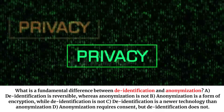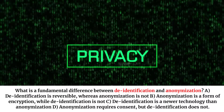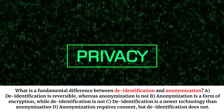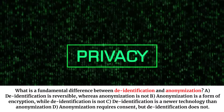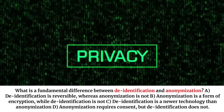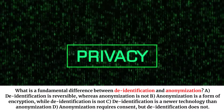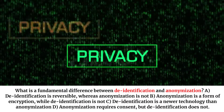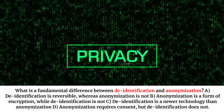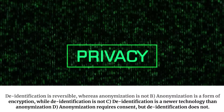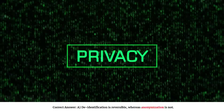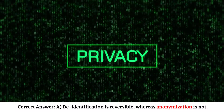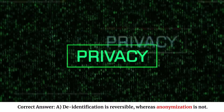What is a fundamental difference between de-identification and anonymization? A. De-identification is reversible, whereas anonymization is not. B. Anonymization is a form of encryption, while de-identification is not. C. De-identification is a newer technology than anonymization. D. Anonymization requires consent, but de-identification does not. Correct answer: A. De-identification is reversible, whereas anonymization is not.